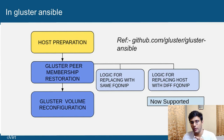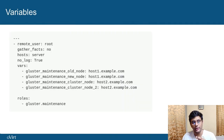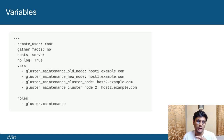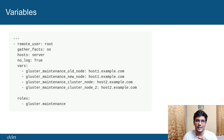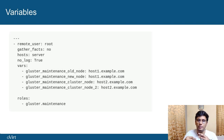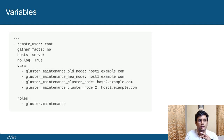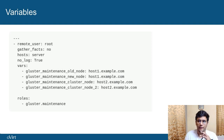Before I dive into replacing cluster in Overt Engine, it's important to understand the variables we use here. We are basically using four variables. The first one is Cluster Maintenance Hold Node — this is basically the node which is corrupted and which needs to be replaced. The second one is Cluster Ansible New Node. If you are going with same node FQDN, Hold Node and New Node should have the same FQDN, because New Node represents the node which is replacing the corrupted node.